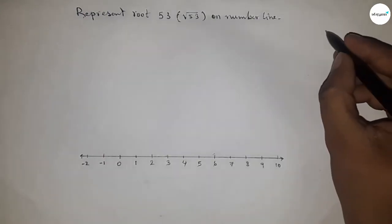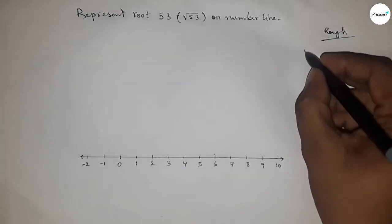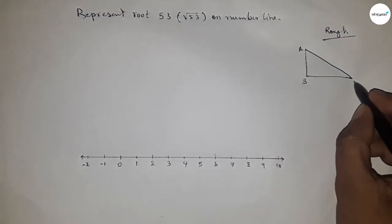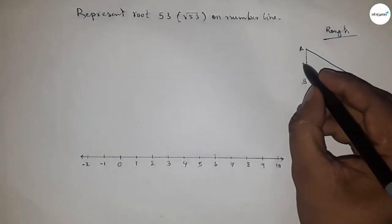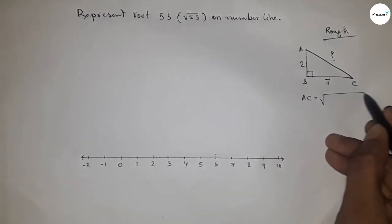Now roughly discussing the calculation. So if there is a right angle triangle ABC with base equal to seven and height equal to two unit, then what is hypotenuse? So by Pythagoras theorem, hypotenuse equal to root over height square plus base square.